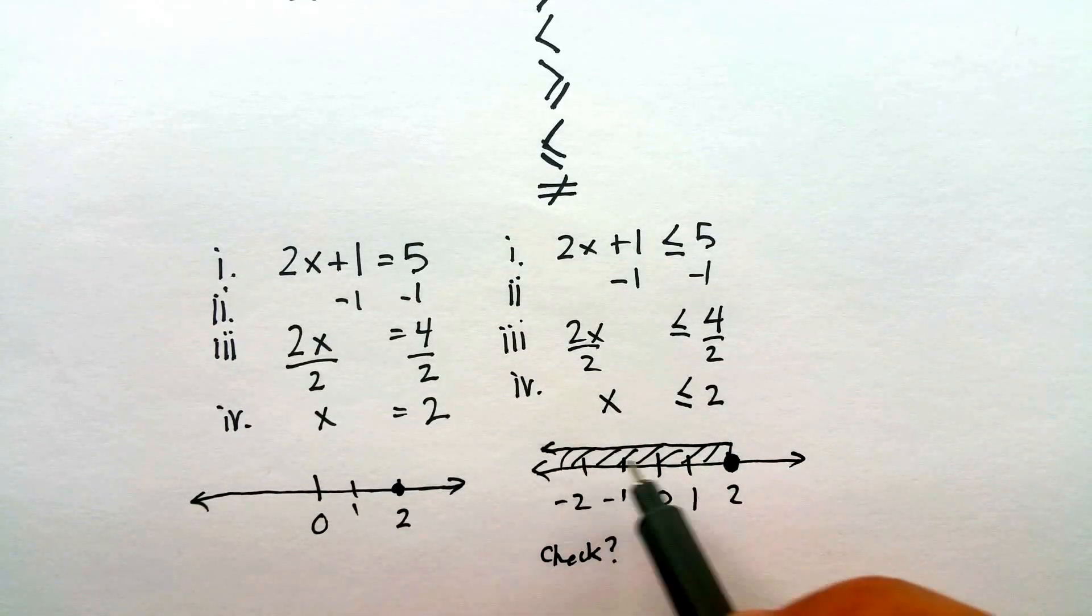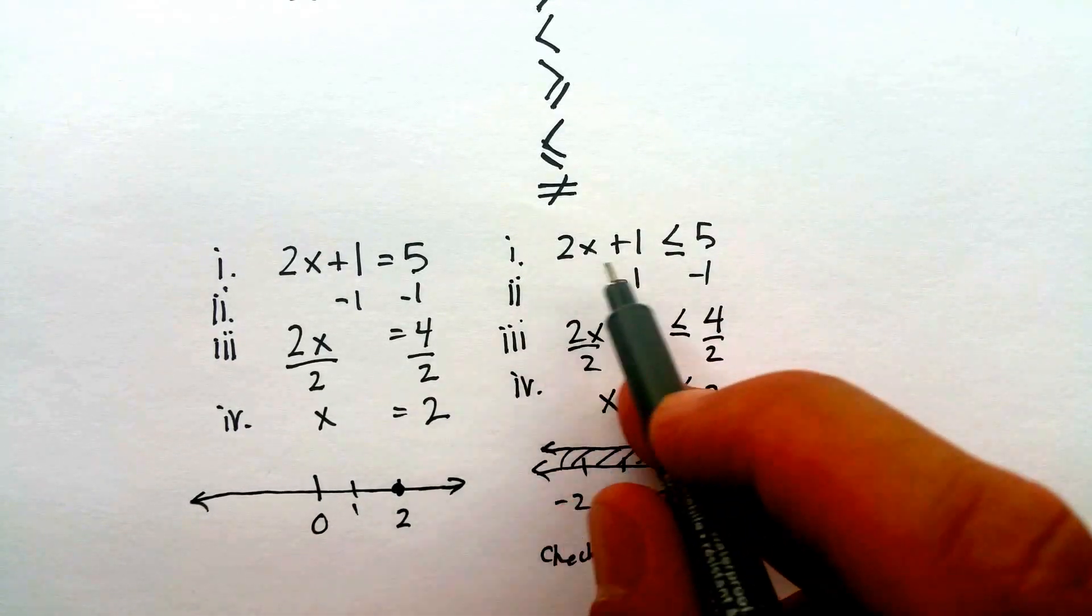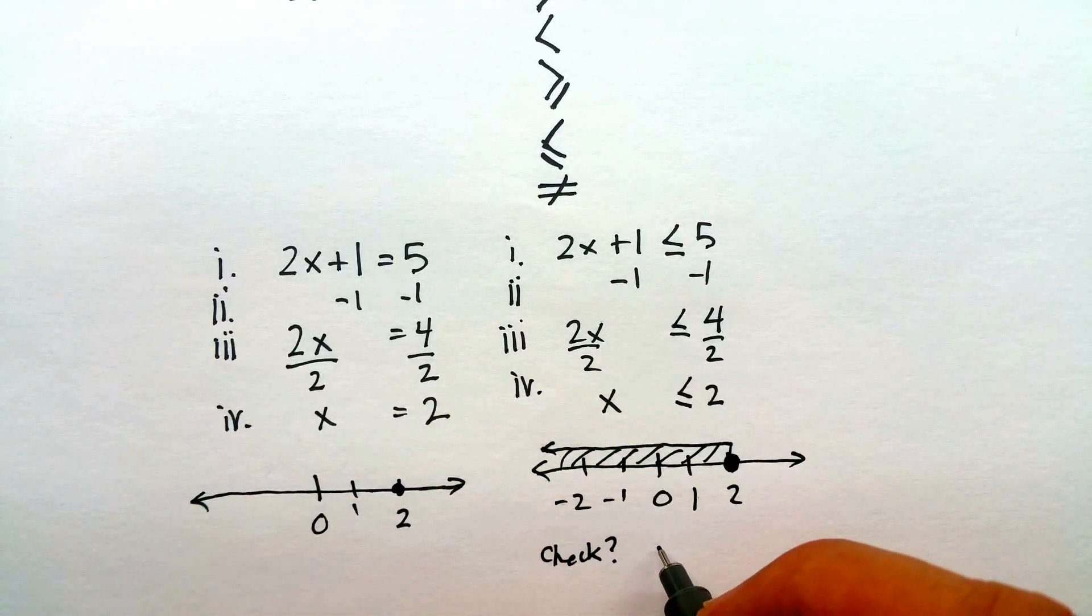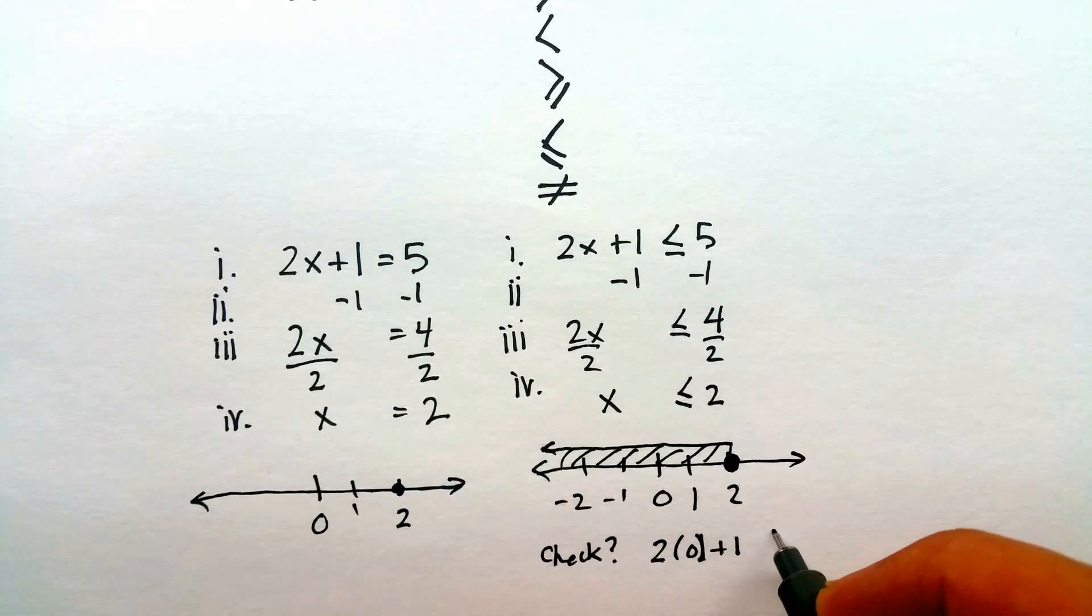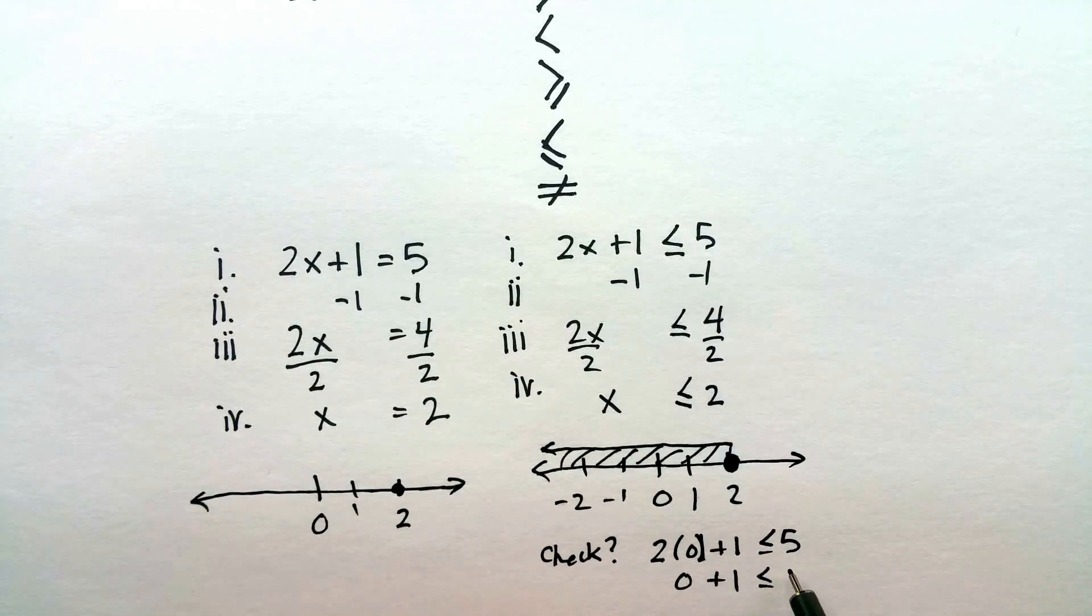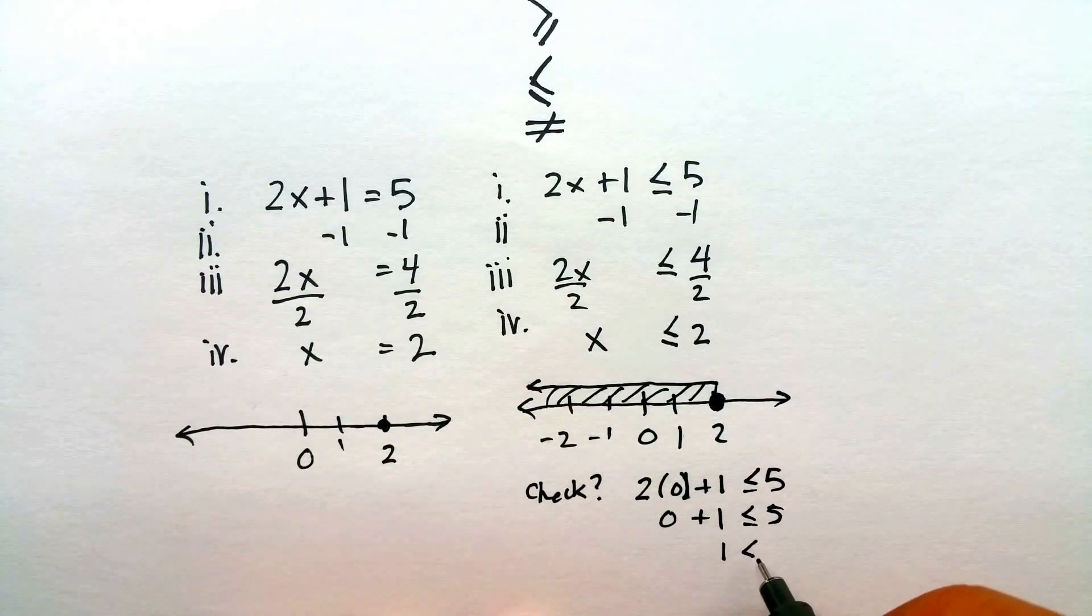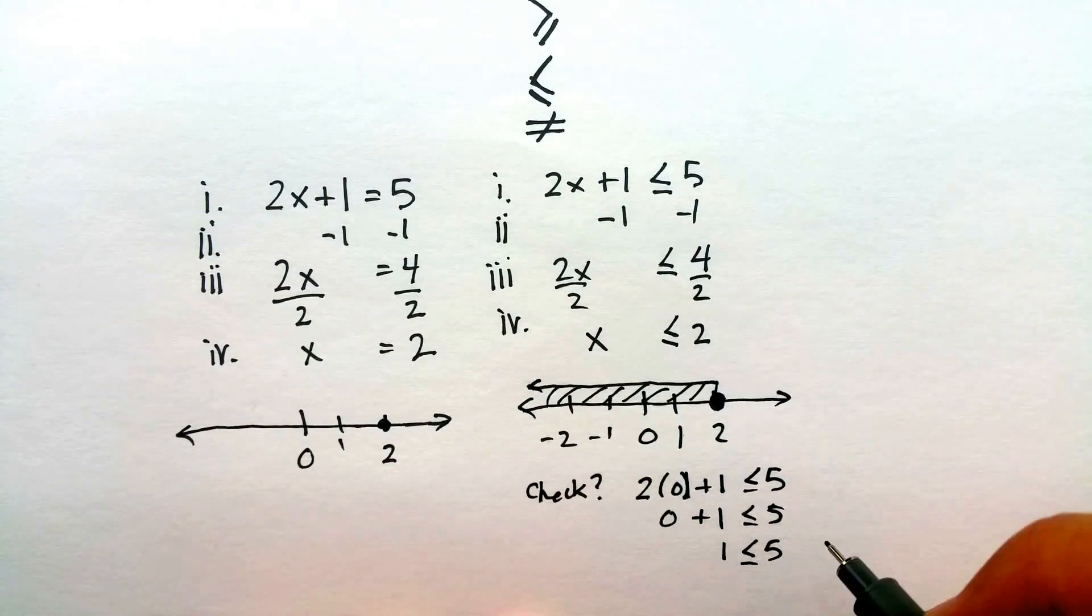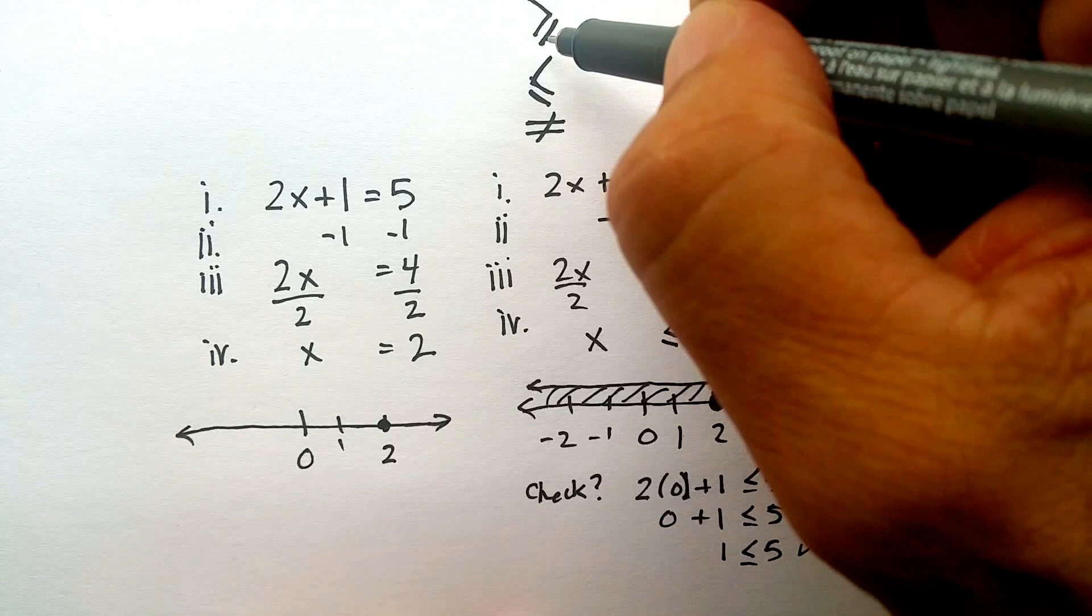I would just choose any number that is shaded. Let's just choose, I don't know, 0 for example, and let's plug it into the original inequality. So I'd say 2 times 0 plus 1 should be less than or equal to 5. 2 times 0 we know is 0, plus 1, and again we know that 1 is indeed less than or equal to 5. So this actually does end up working.